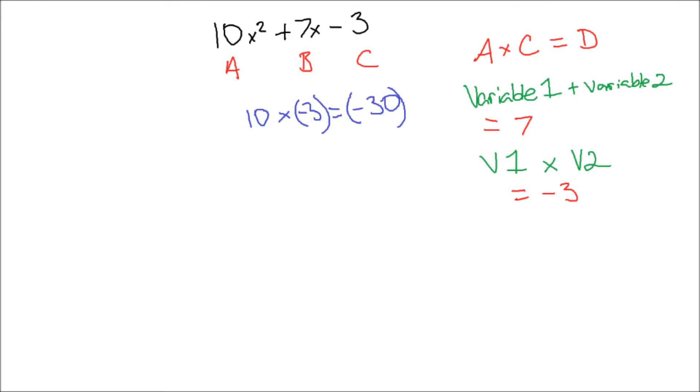In order to find two numbers that add together to get B, we first need to find two numbers that multiply together to get D. In this picture, those two numbers that are unknown are marked as variable 1 and variable 2. As you can see, I have easily found six combinations of two numbers that multiply together to get negative 30.